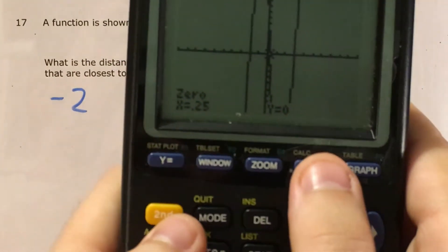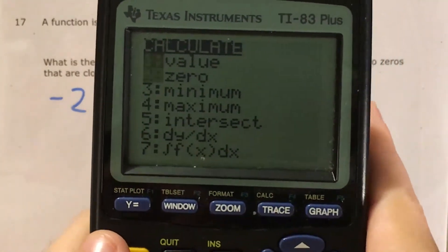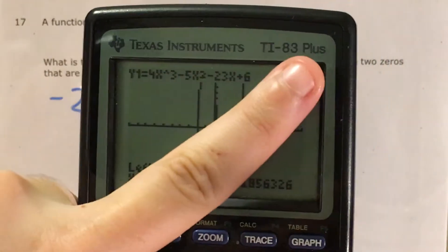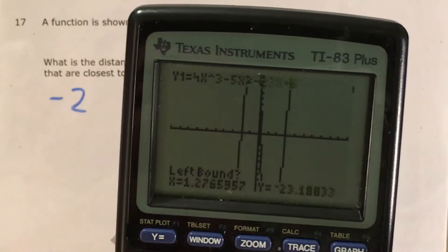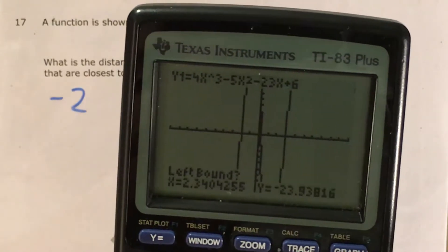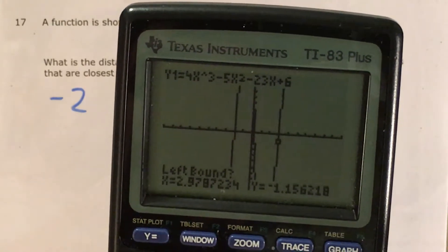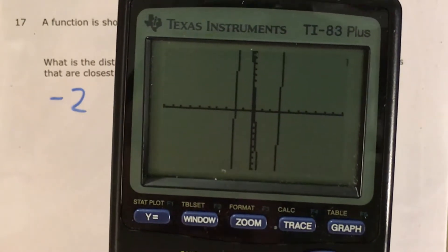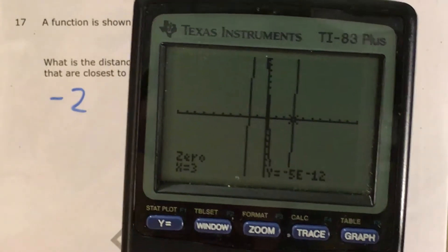Now I find my last zero: second trace, find zero in the calculate menu. For this last zero, my function's kind of doing this so my left bound has to be just below. That's as close as I'm going to get. My right bound is just above, I guess, and it gives me 3.